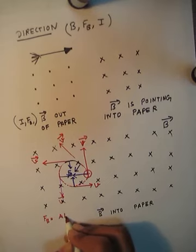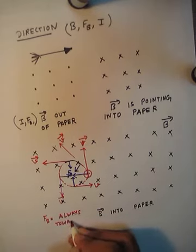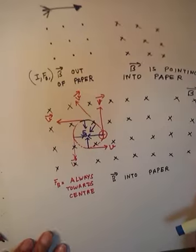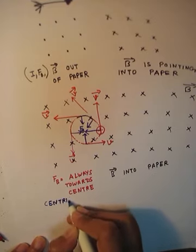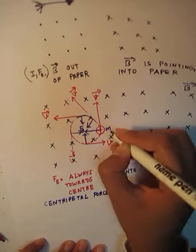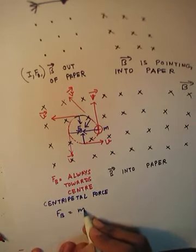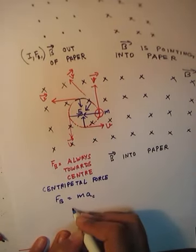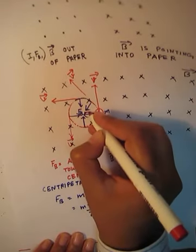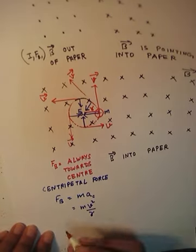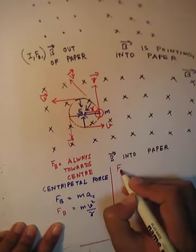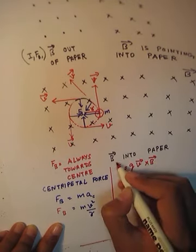So if a positively charged particle enters a magnetic field, it will move in a circular path such that the force is always towards the center. This magnetic force pointing towards the center is called centripetal force. If the mass of this positively charged particle is m, this centripetal force will be given by m times v squared upon r, where r is the radius of the circular motion. And the magnetic force is equal to this centripetal force.